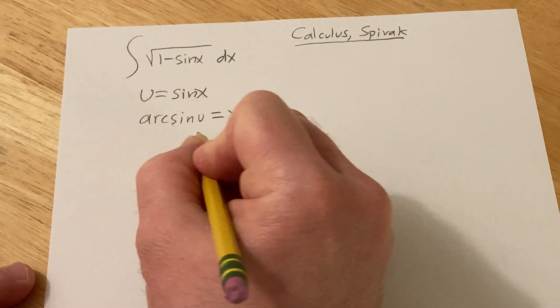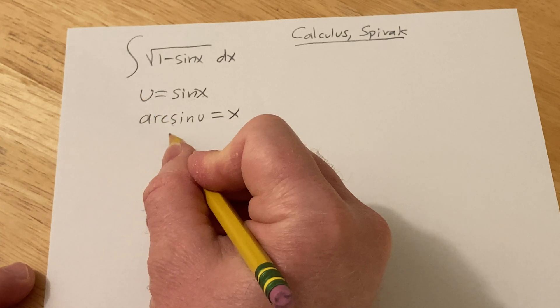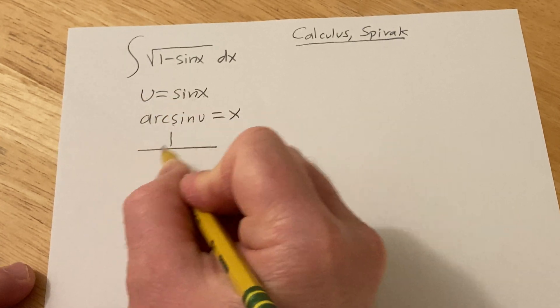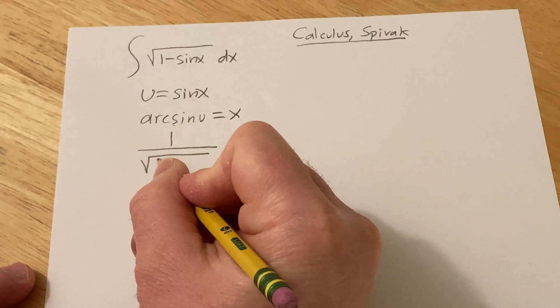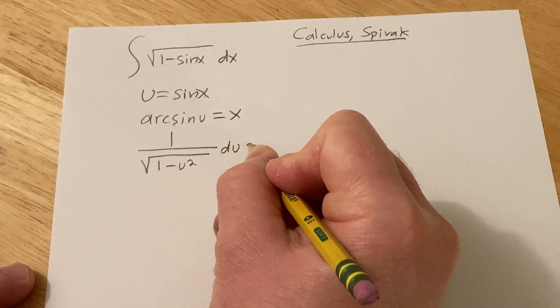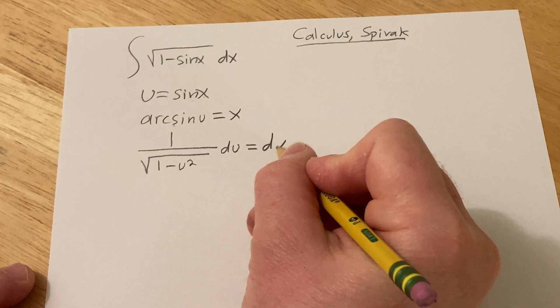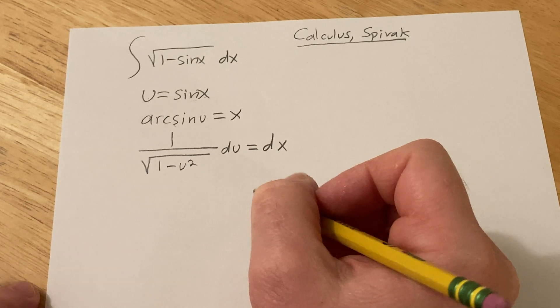So taking the derivative of both sides here, the derivative of arc sine is 1 over the square root of 1 minus u squared, du, and then here we get dx. Very nice.